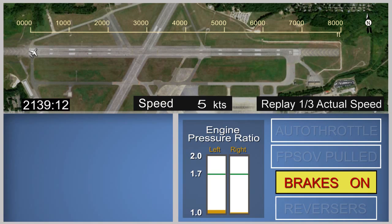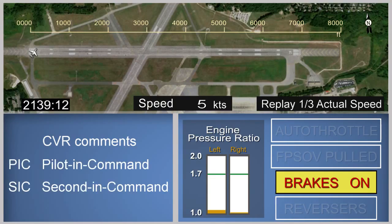The animation does not depict the night lighting conditions that existed at the time of the accident. Certain system parameters or settings are shown, but these displays are not intended to mimic the actual displays in the cockpit. Selected comments from the CVR transcript attributed to the Pilot-in-Command and Second-in-Command appear as text at the time indicated in the transcript on the left side of the display area.